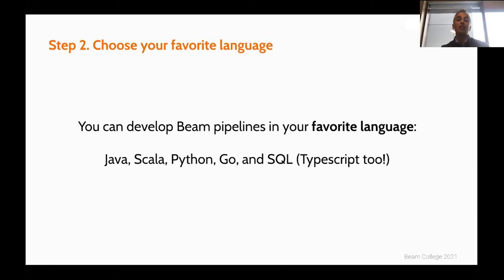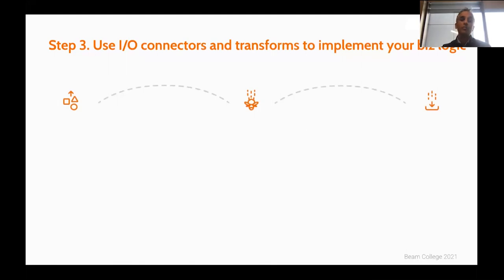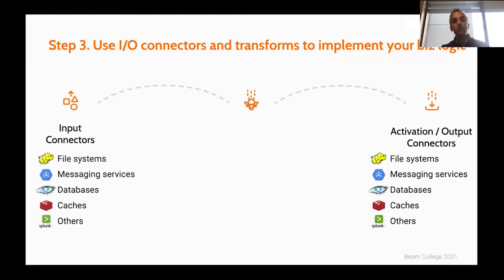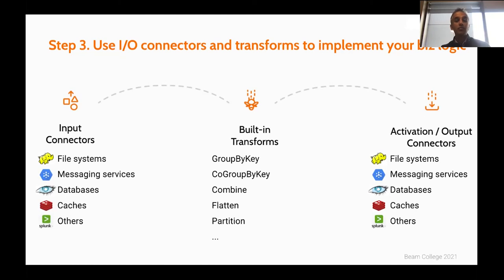You can mix and match — for example, using Python transforms in your Java pipelines. Step three: use Beam's built-in IO connectors and transformations to connect your sources and sinks. The unified model, IOs, and the Beam model all support both sources and sinks. Built-in transforms include group by key, combining, flattening, and partitioning — all built into the Apache Beam model.